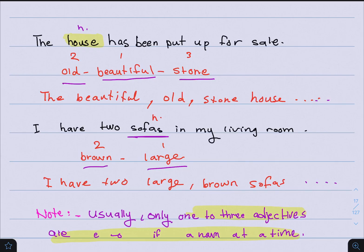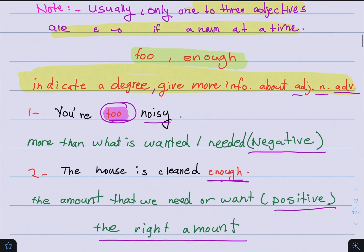As I said earlier, usually only one to three adjectives are used to describe a noun at a time. We don't use more than three adjectives to describe a noun. Now let's move on to the next topic, which is too and enough.